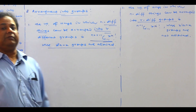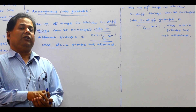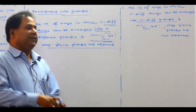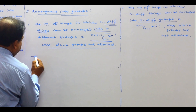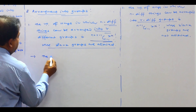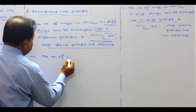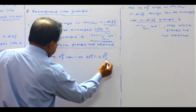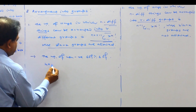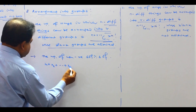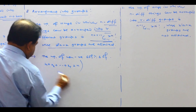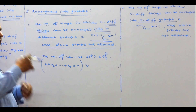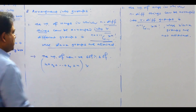Blank groups are allowed means you will find out the number of non-negative solutions of x1 + x2 + ... + xR = N, and then multiply by the number of arrangements of N objects, which is N factorial.